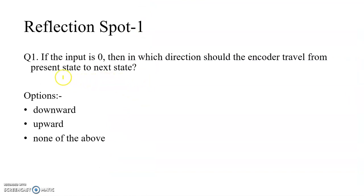Now we have a reflection spot. The question is: if the input is 0, in which direction should the encoder travel from the present state to the next state? The options are downwards, upwards, or none of the above. The answer is: if the input is 0, then we travel upwards.